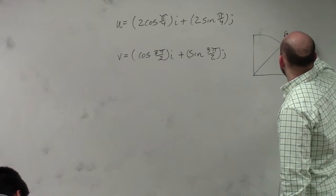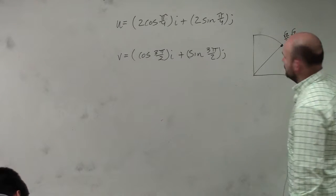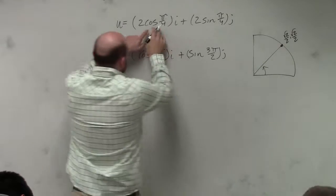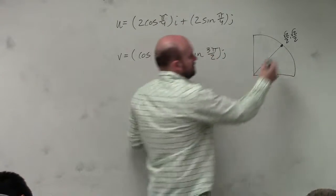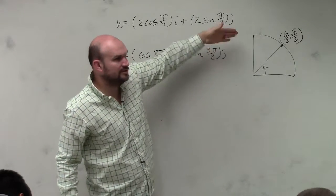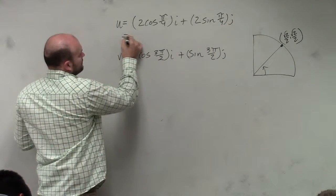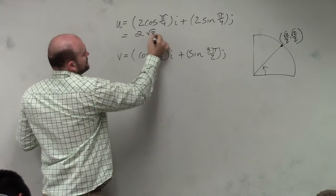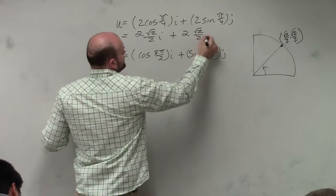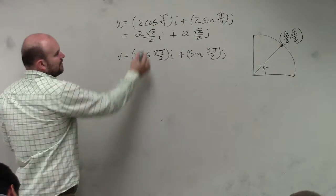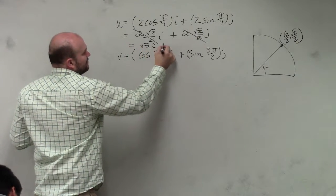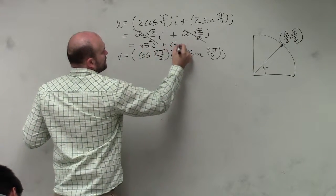Here's pi over 4. That's square root of 2 over 2, comma, square root of 2 over 2, right? That's pi over 4. So I can replace cosine of pi over 4 with square root of 2 over 2. I can replace the sine of pi over 4 with square root of 2 over 2. So I can do 2, square root of 2 over 2i, plus 2, square root of 2 over 2j. And then what happens? So I'm left with square root of 2i plus square root of 2j.